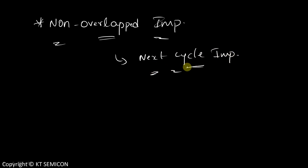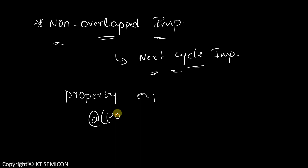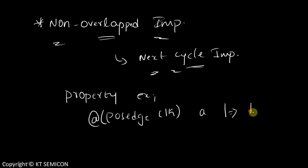Let's take an example. If we declare a property — 'property example @(posedge clk): a |=> b; endproperty' — the non-overlapped implication is represented by the '|=>' symbol. This is the non-overlapped implication operator.